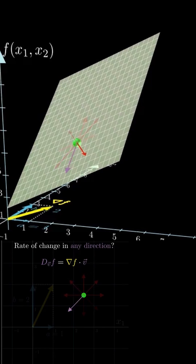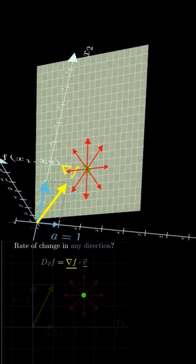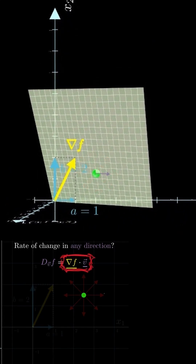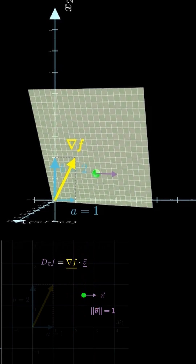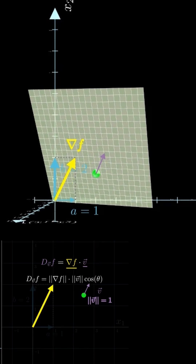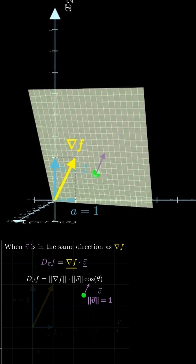And here's the neat part. It's computed by taking the dot product of the gradient vector with that direction vector v. Remember, v has to be a unit vector, so its length is 1. Now, among all possible directions, in which direction does the directional derivative reach its maximum? In other words, which direction makes f increase the fastest? Of course, the gradient itself. That's what the gradient has been telling us all along — the steepest direction.